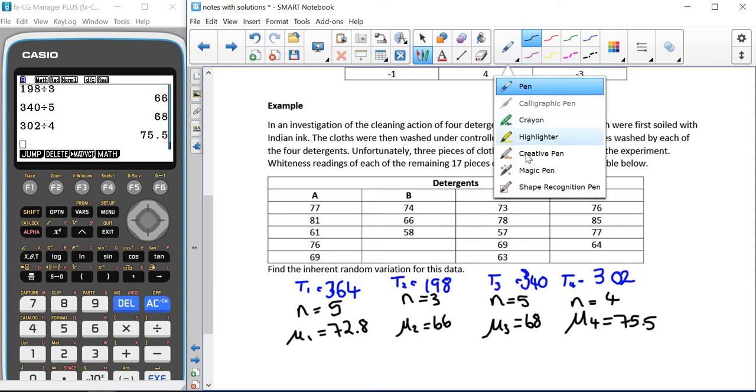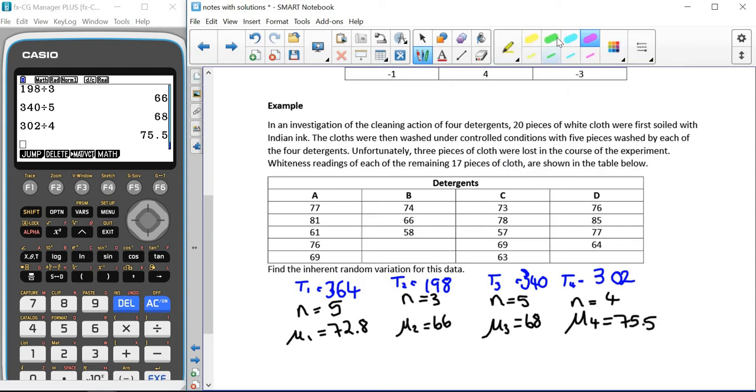Now, if we were being asked a question about the contributions that each one made, or if we thought that any of these were actually really different to the others, then we could have a look at these and we could make a comment about the second detergent, detergent B being the least effective, and the fourth detergent, detergent D being the most effective. So we can see the differences here.